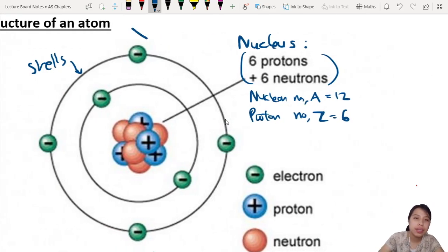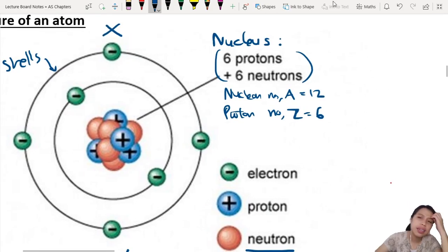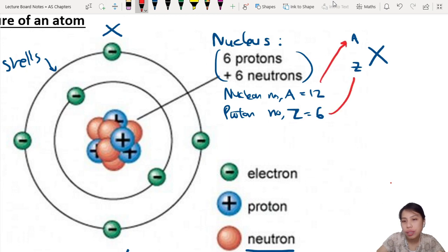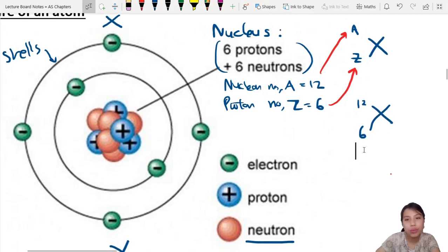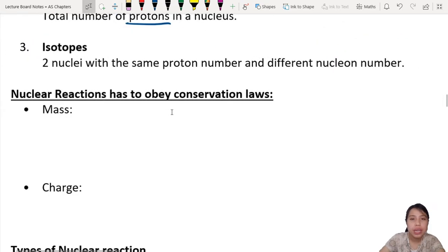Proton number - how many protons? It's already written there, so Z is six. The proton number determines what element it is. If you want to express this element X, I can write it this way: you put your nucleon number on top, proton number down there. For this particular element, I can say element X has 12 as its nucleon number, and proton number of six. Check your periodic table, look for proton number six.